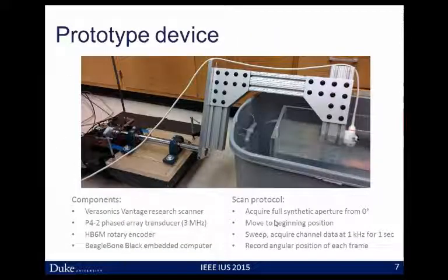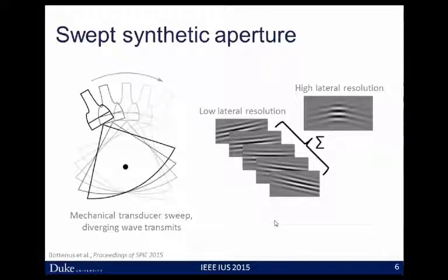The basis of this technique is a mechanical transducer sweep. We sweep in an arc from left to right, and as we do so, we precisely track the location of that transducer. As we sweep, we transmit diverging waves covering the region of interest in the center. You can use other virtual source or plane wave techniques as long as you sufficiently insonify the region of interest. At each position we acquire a low-lateral-resolution image. Here we see five samples, each of which has already been spatially registered using that known position information. That sub-wavelength positioning allows us to coherently sum this RF data and build up a single high-lateral-resolution image.